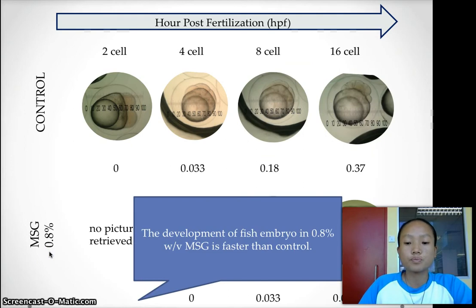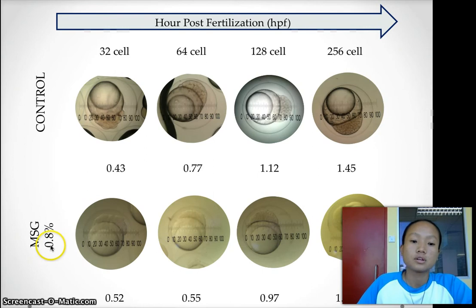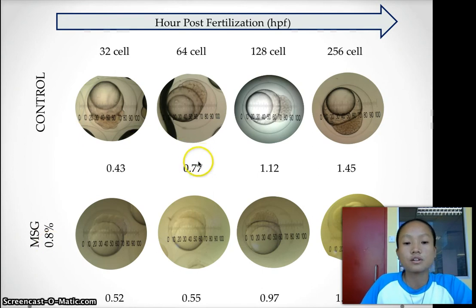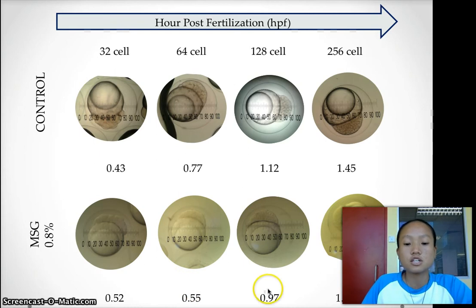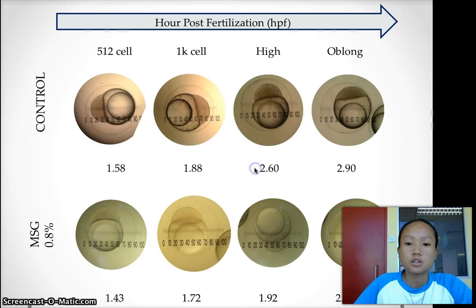However, the development of fish embryo in 0.8% MSG is faster than the control. For example, at the 64-cell stage, the HPF is 0.77 for the control but 0.55 for MSG. At 128 cells, MSG is 0.97 HPF but the control is 1.12 HPF. A similar trend can be seen as we move along the slides.